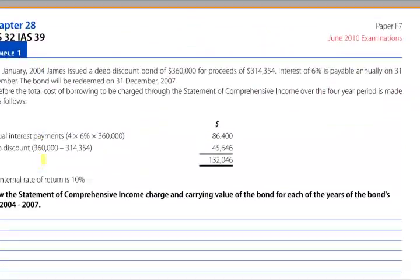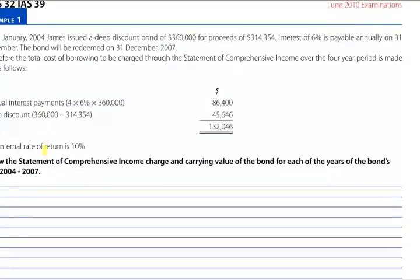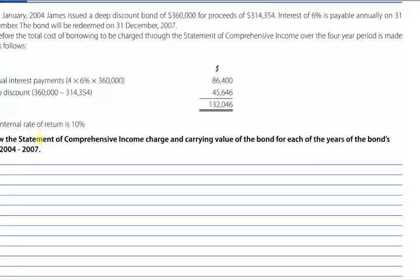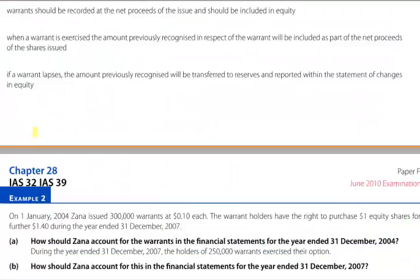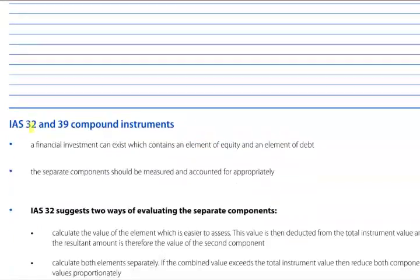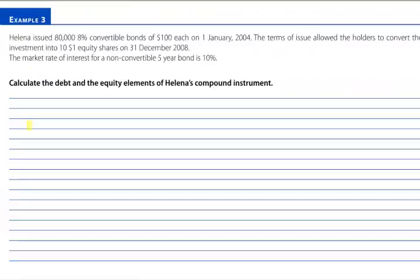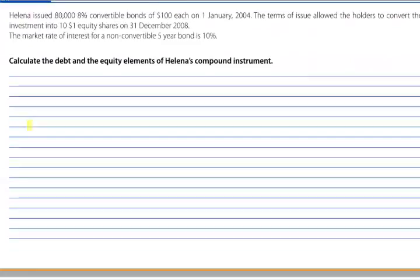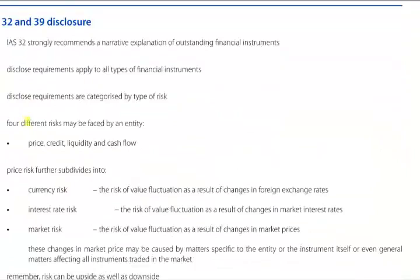There are examples. Example 1 is about James issuing a deep discounted bond. The answers are clearly within the OT set of notes and it should be relatively straightforward to check through the calculation. Example 2 is Zana issuing 300,000 warrants at 10 cents each — I suggest you check the answer at the back of the OT notes. Example 3: Helena issues 80,000 8% convertible bonds — have a look at it and check out the answer at the end of the notes.